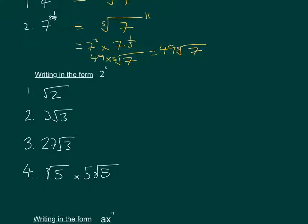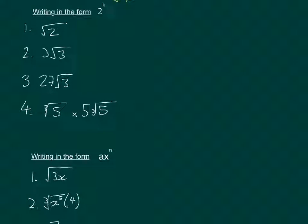Let's move on to the next type. We're writing in the form 2^k, so here we're going from a surd to an indice.